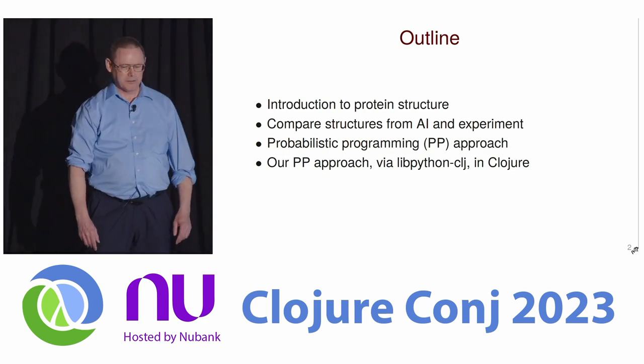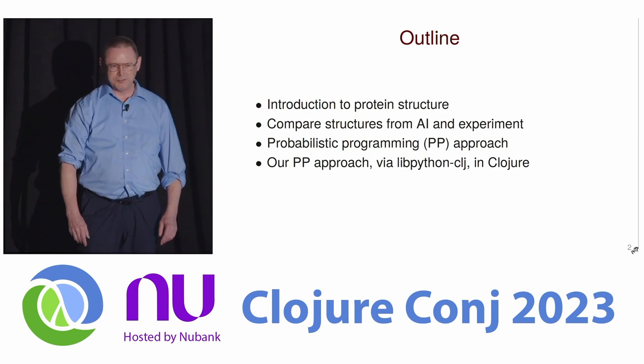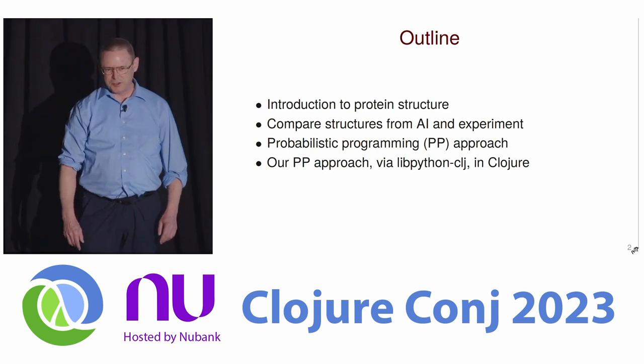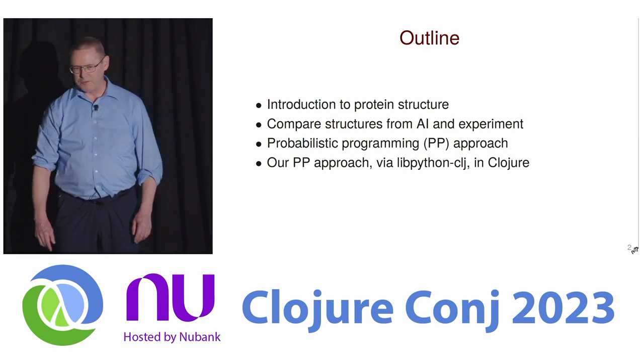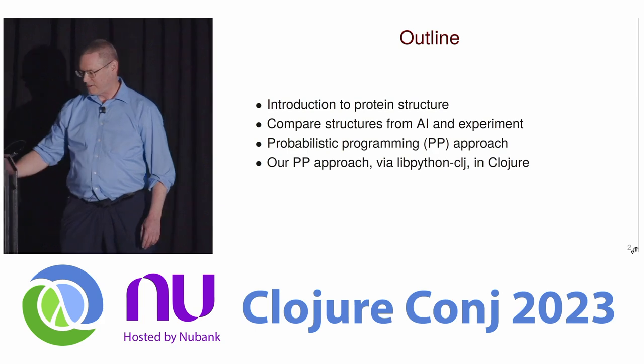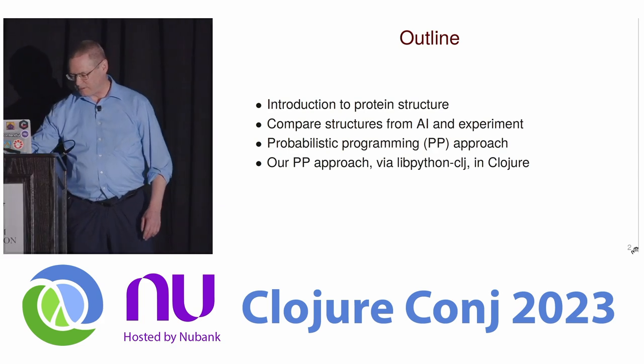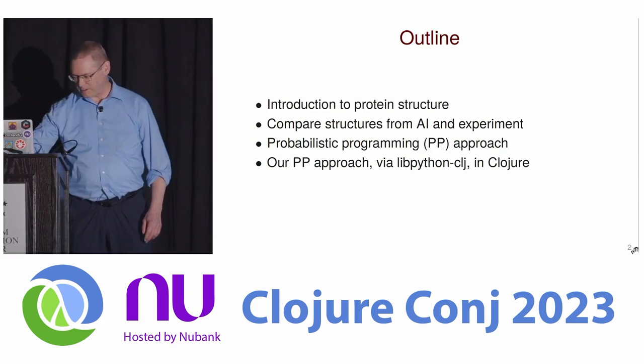I will then introduce probabilistic programming and its use to overlay protein structures. We used a published example to implement in Clojure, and we were able to succeed in doing so thanks to the libpython-clj package.